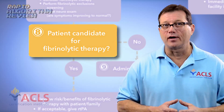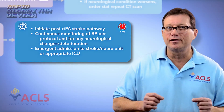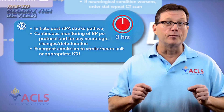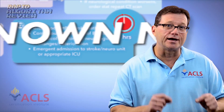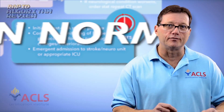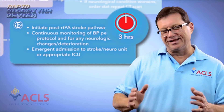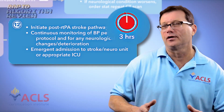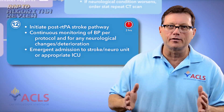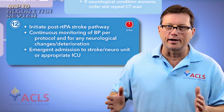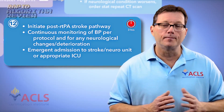If we're going to administer fibrinolytic therapy in an ischemic stroke, we need to try to do this within three hours of the patient's last known normal. That's why it's so important to get that information in the field and relay it to the hospital. We'd like to give that medication within three hours, though for some patients it can be extended to four or four and a half hours — but it's always measured from the time of their last known normal.